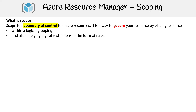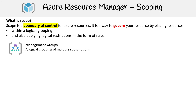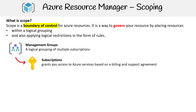The first scope we're going to talk about is management groups. This is a logical grouping of multiple subscriptions, because you can have a lot of subscriptions in your account, and you might want a collection of subscriptions to belong to some kind of domain — maybe it's for development, business, or data sciences, whatever you want.